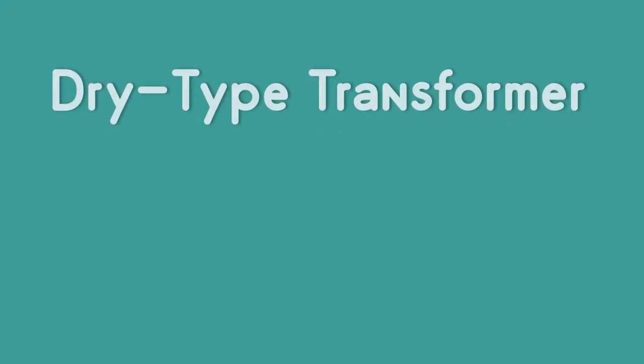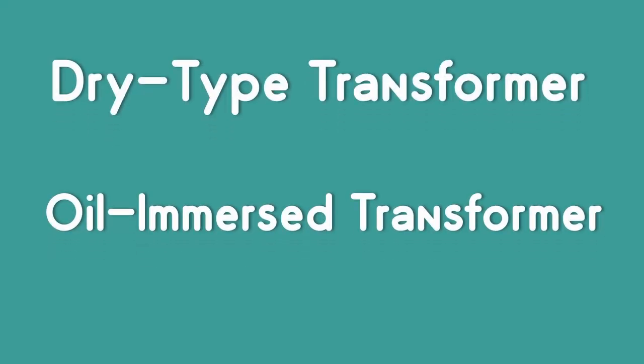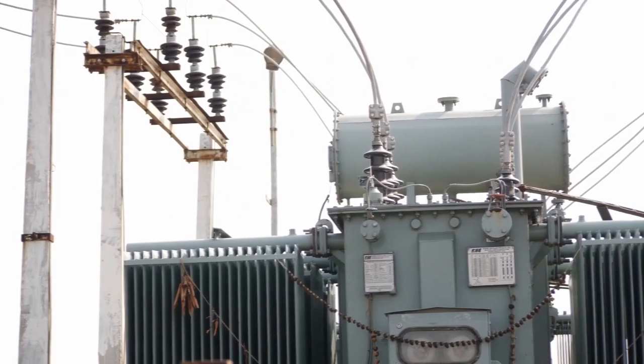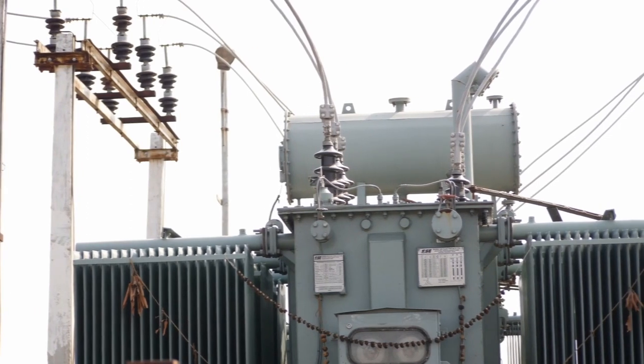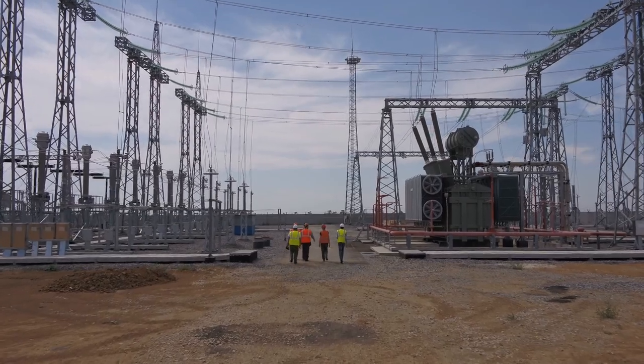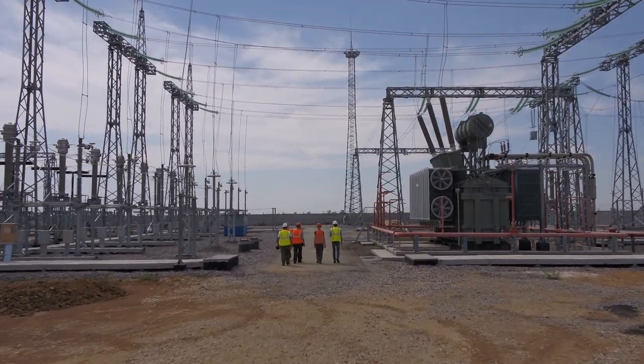There is a dry type transformer and oil-immersed transformers. Dry type transformers use air as a cooling medium. The oil-immersed transformers use transformer oil as a cooling medium. They are used in power distribution or electrical substations.